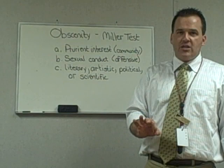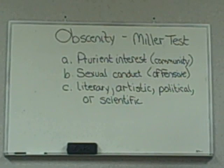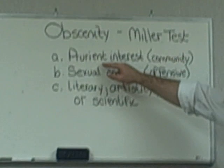If it meets one of these three — as few as one — it will be protected under the First Amendment and somebody can do or say those things. This test is actually known as the Miller Test, and there are three prongs to this test.